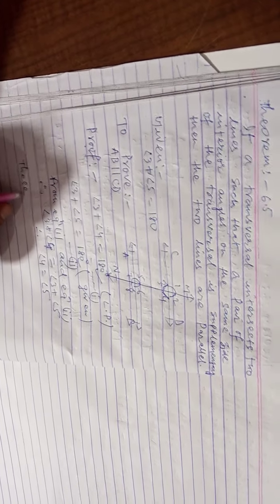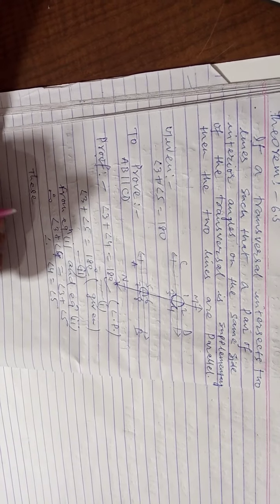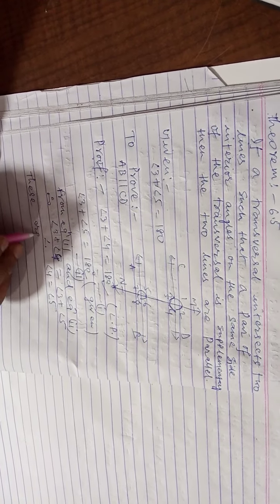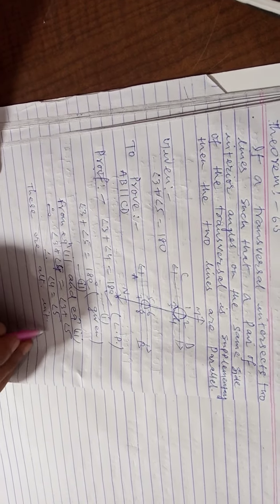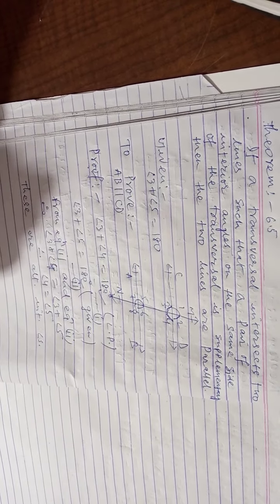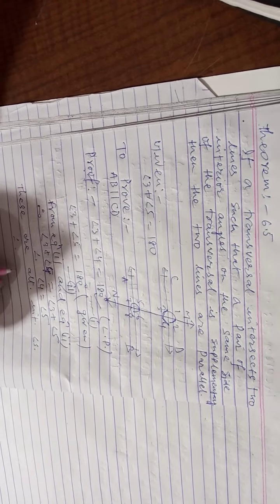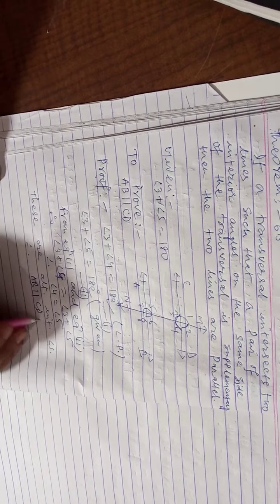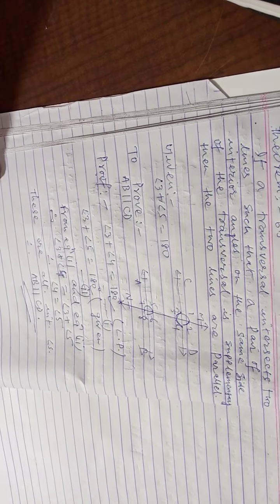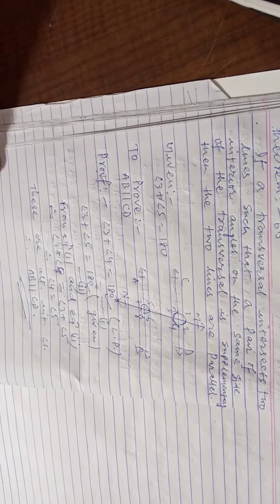Angle 4 and angle 5 are alternate interior angles. Alternate interior angles are equal. So what do we call two lines? Parallel. AB and CD are parallel. Okay, thank you.